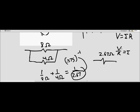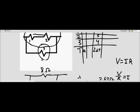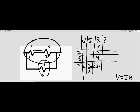So 12 volts over 2.67 ohms equals the current. The total current is 4.49 amps — current is represented in amps, symbolized by a capital A. Lastly, we have the power column. There are actually three different equations on your equation sheet for power, but the one I'm going to use is P equals IV. So 4.49 times 12 gives us a power of 53.88 watts.